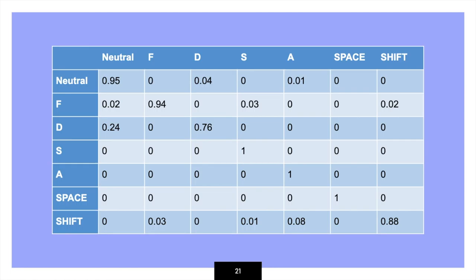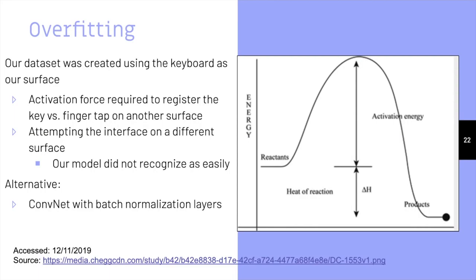To fix this problem, we set a lower threshold for that key. After collecting and testing our datasets, we realized that our model was not able to reliably classify gesture inputs on another surface, most likely because we collected our datasets using a laptop keyboard. When pressing a key, an activation force is required for it to register, and this change in force was reflected within our datasets — comparable to activation energy in chemistry. Other surfaces do not present the same impediment in motion, so our model could not recognize them. This would be an area of improvement in future iterations, and a potential fix could be a ConvNet with batch normalization layers to regularize the model and reduce overfitting.